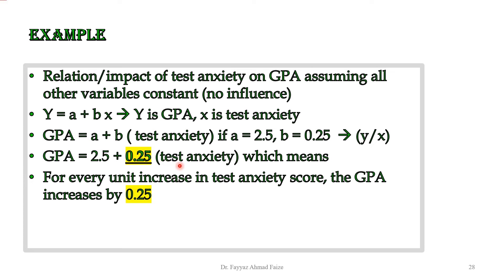We have to be very careful about units, as they can be different — GPA is represented as numbers reflecting your score. So 0.25 means that for every 1-unit increase in test anxiety score, the GPA changes by 0.25 units. If the sign is positive, the GPA increases by 0.25, but if there is a negative relationship between test anxiety and GPA, we would say: for every increase in test anxiety, the GPA decreases by 0.25.